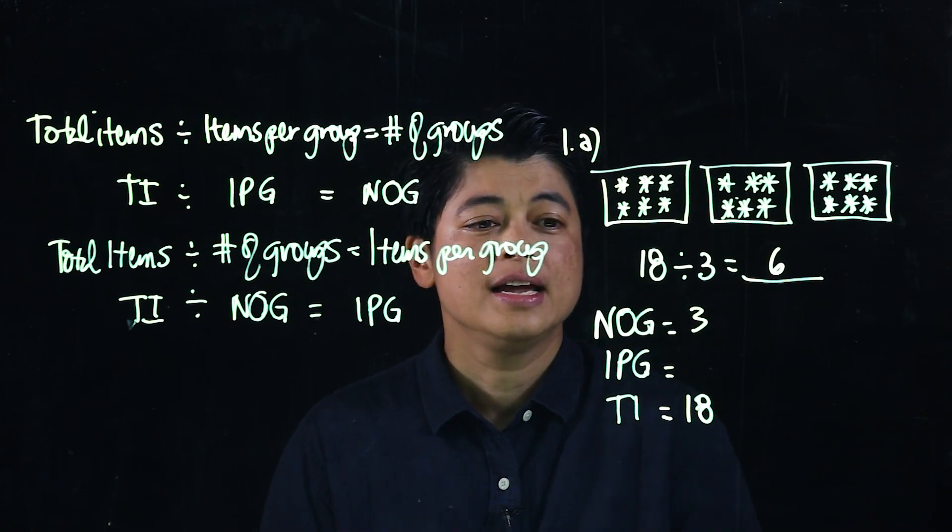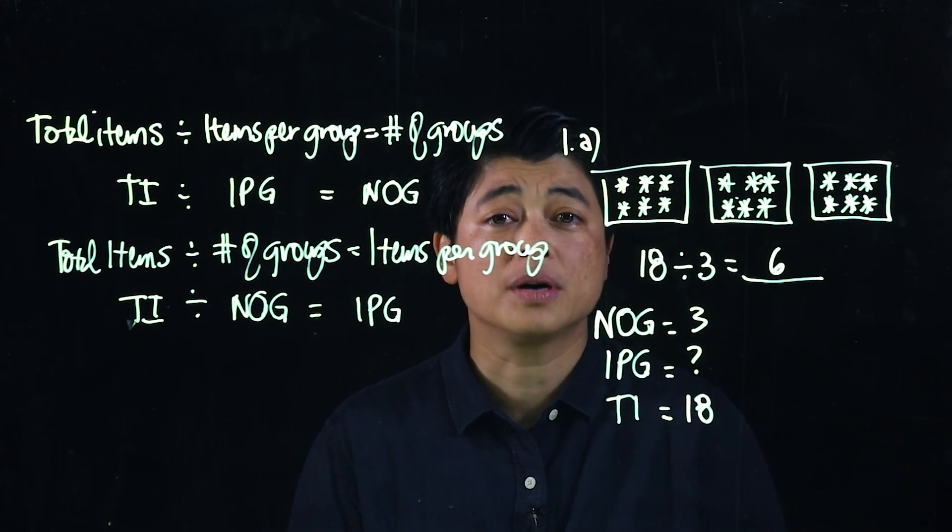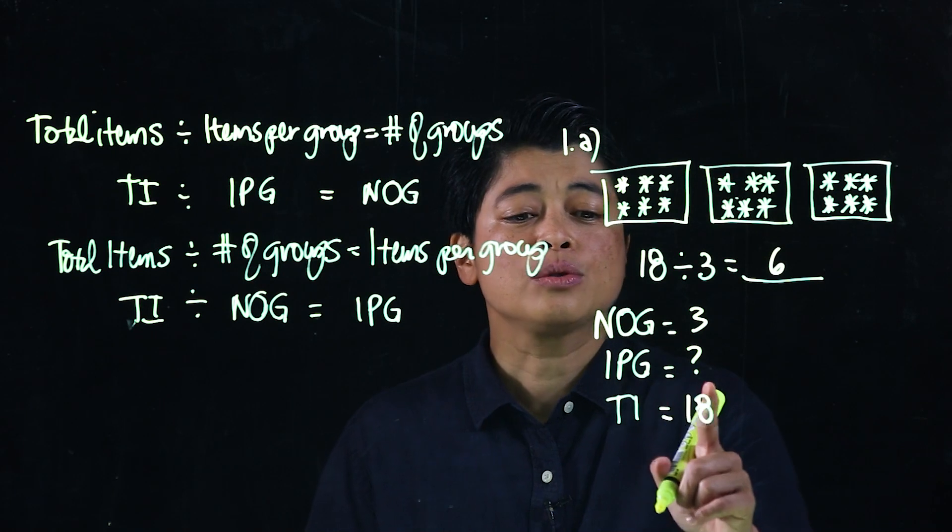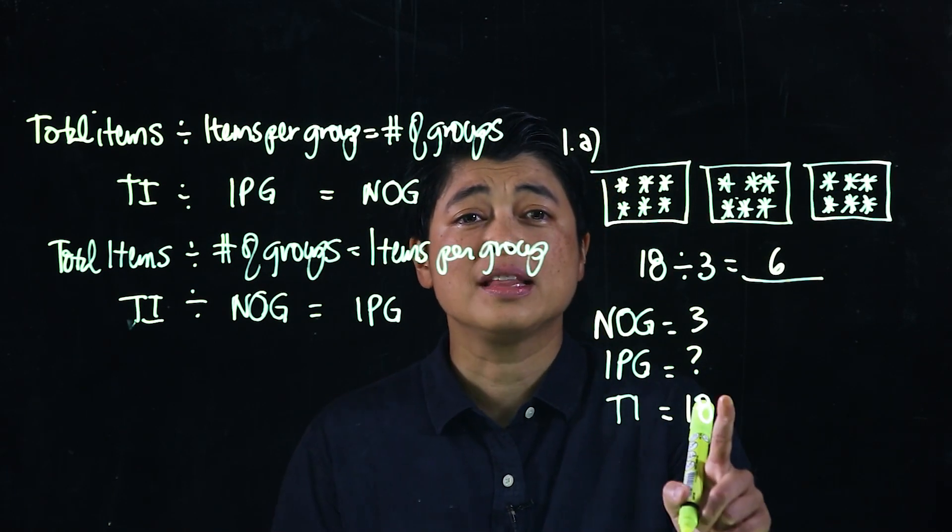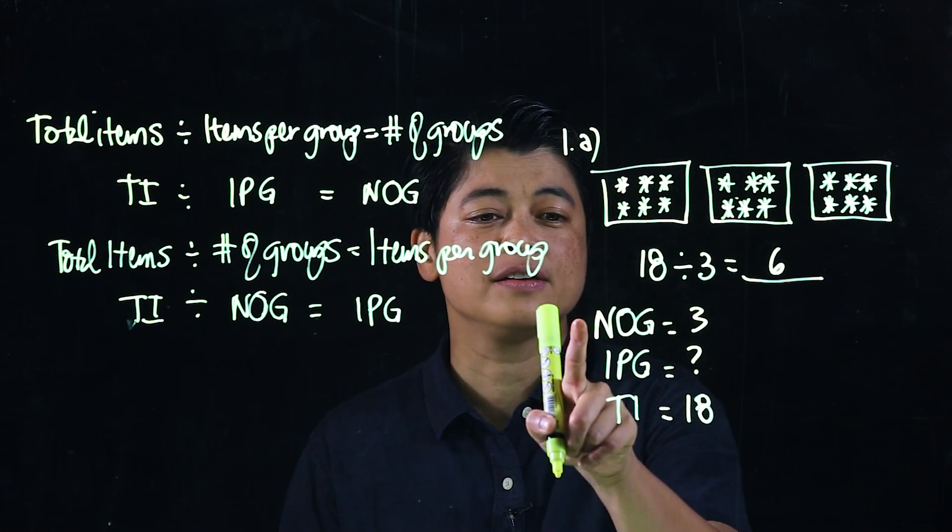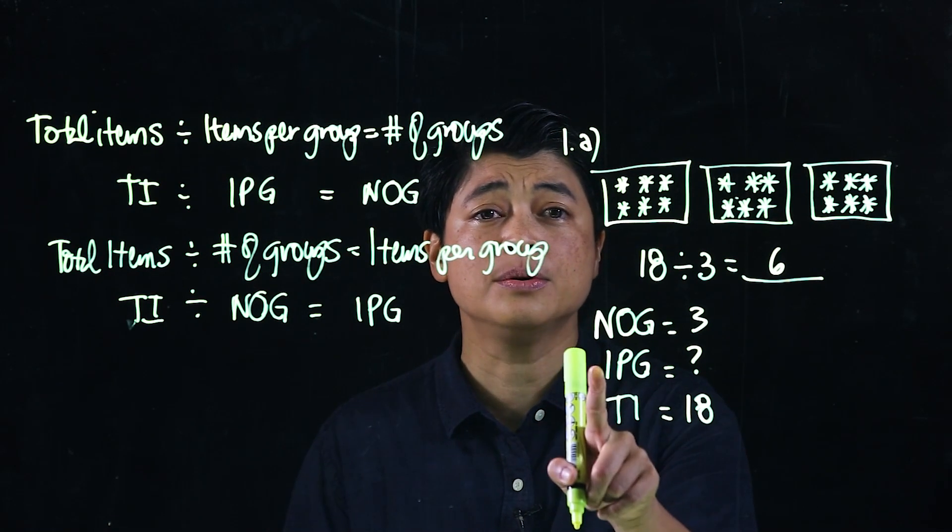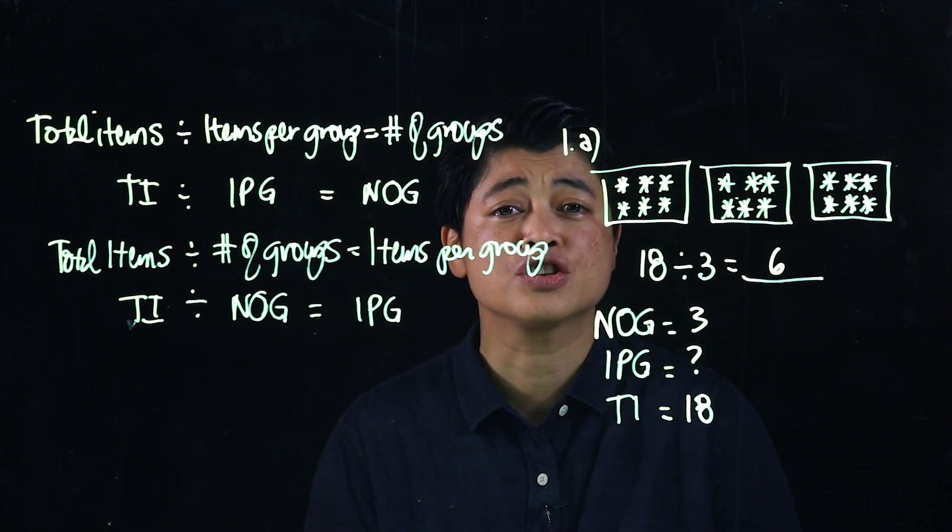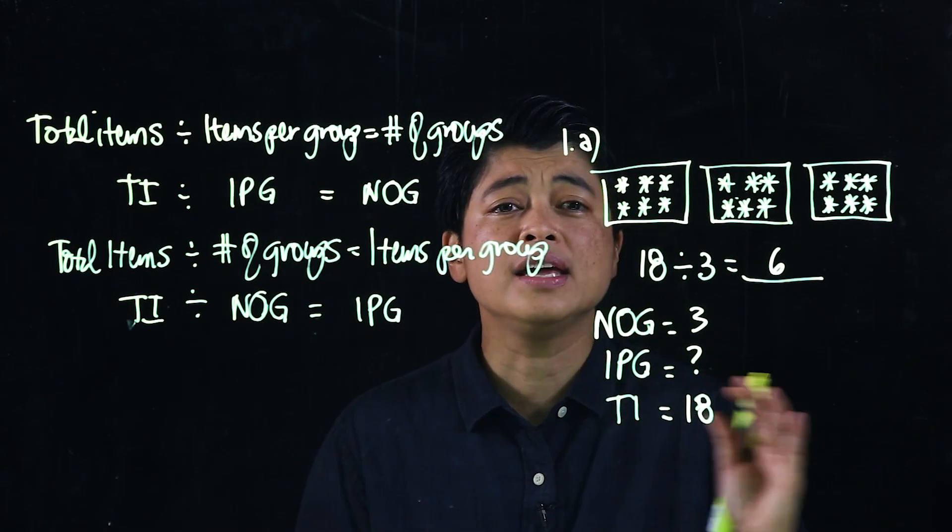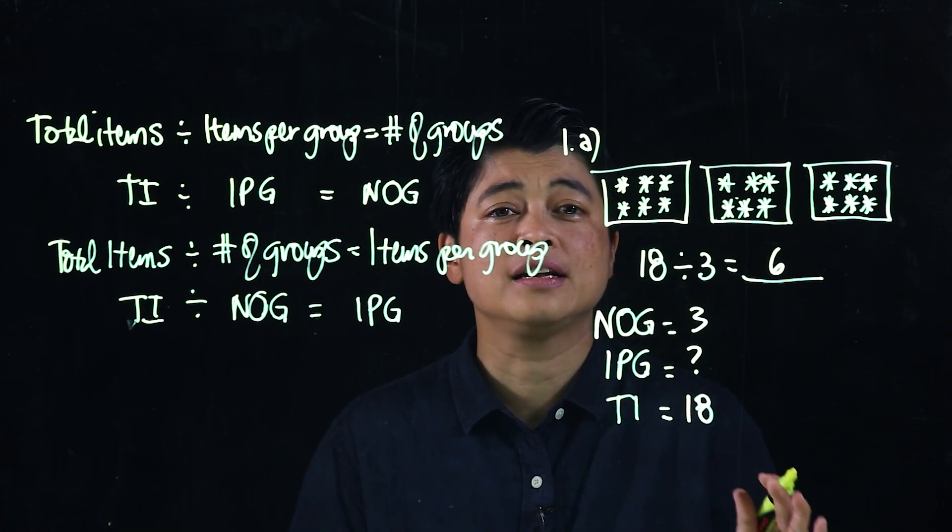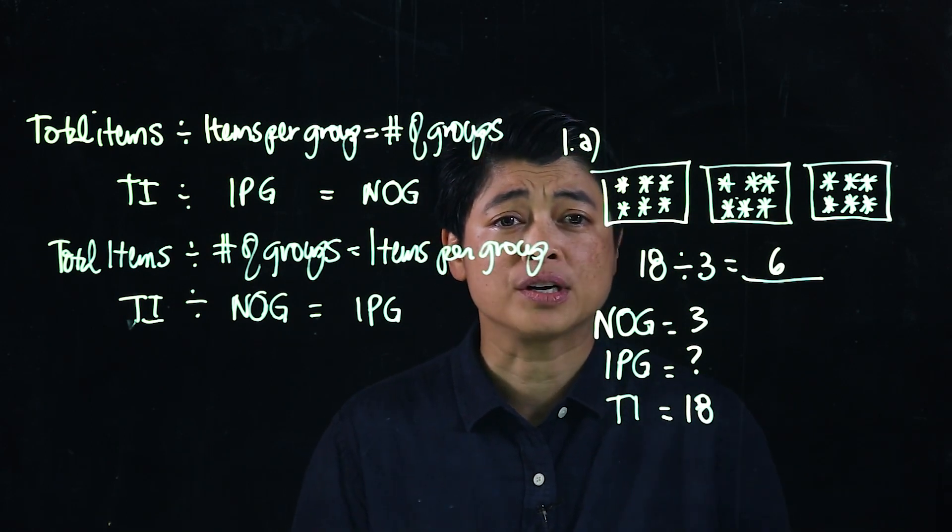And therefore this is a question mark. So when the total items is unknown that's multiplication, which means if either one of these is unknown then that means that will be division. Again all of this will be expressed in greater detail in future chapters.